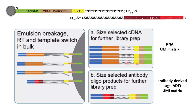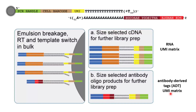The beads were purified and subject to cDNA synthesis. We can get sequencing information from the mRNA, producing an RNA-UMI matrix. We can also get information for the antibodies, producing an ADT-UMI matrix. Later we need to read both the RNA-UMI matrix and the ADT-UMI matrix data into R.